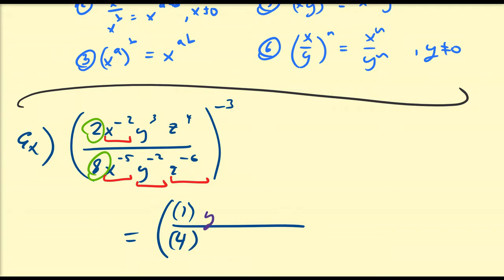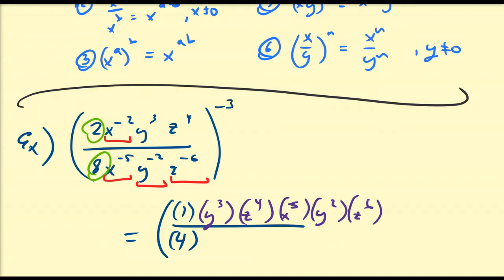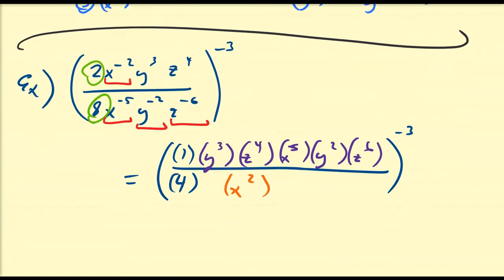So currently y cubed and z^4 are on top. Everything on the bottom — x^5, y^2, z^6 — are going to come up to the top. And what goes on the bottom? Nothing from the bottom stays there, but x to the positive second goes on the bottom. Now I'm going to combine things where I can: y cubed and y squared combine, z^4 and z^6 combine, and we can use our quotient rule to handle x^5 and x^2.